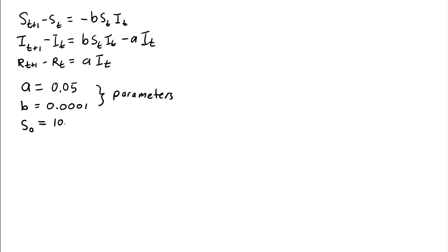S0 equals 10,000. And I0, let's start with 1,000. So we have 10,000 folks that are susceptible, 1,000 that are infected, and we don't need to start with any recovered. So let's let R0 equal 0. So these are our initial conditions.